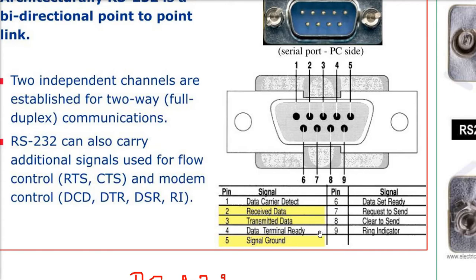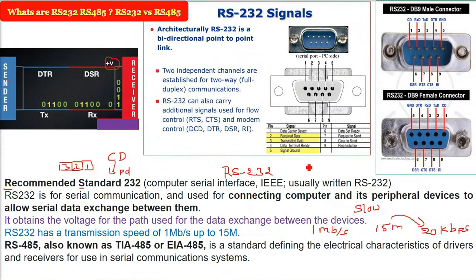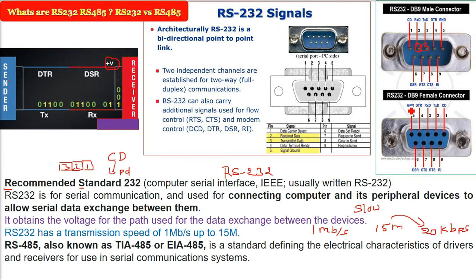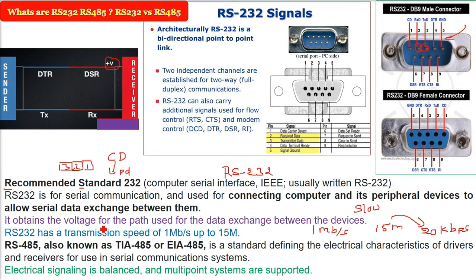RS-232 is unbalanced — received data and transmitted data are on pins two and three. This is the formation of the different pins. The male pin connector and the female pin connector are shown here. We call it DB9.